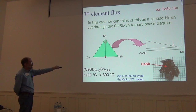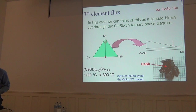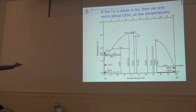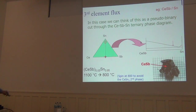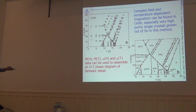There is a liquidus surface in the full ternary. If you put small amounts of cerium antimony into tin, heat it up to 1100°C, cool down to 800°C, and then decant — the reason I stop at 800 and not lower is to avoid growing the unwanted second phase CeSn₃. Following this prescription, determined experimentally, you can get beautiful single crystals of cerium antimony grown out of a tin solution. We then do magnetization and resistivity measurements as a function of temperature and field to map out the phase diagram.